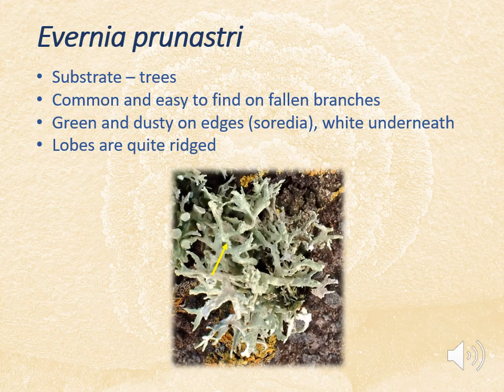Evernia prunastri is a very common foliose species well known for use in natural dyeing and the perfume industry. It's unusual in that it has the appearance of a fruticose species when in fact it is a foliose species — you can tell by looking at the thallus because it's quite flat and the photobiont is only present in the upper surface. Look for soredia on the upper surface of the thallus and also quite loose ridges.